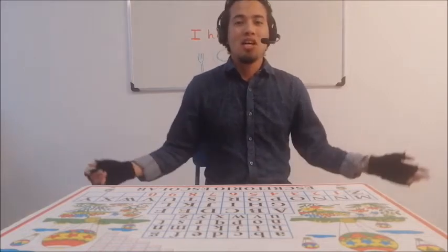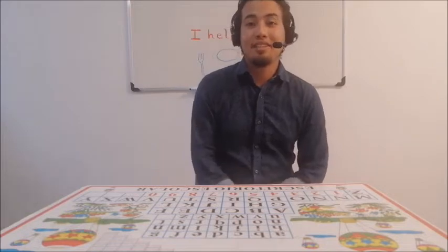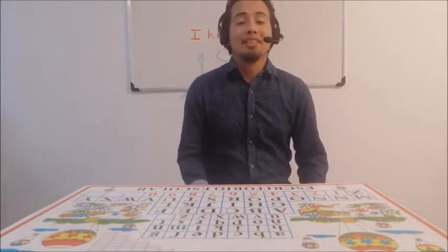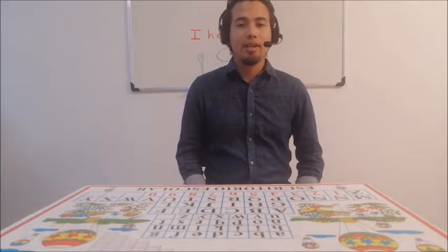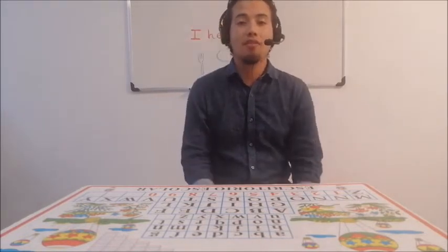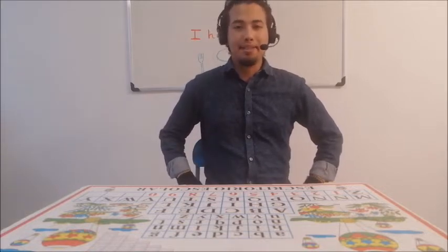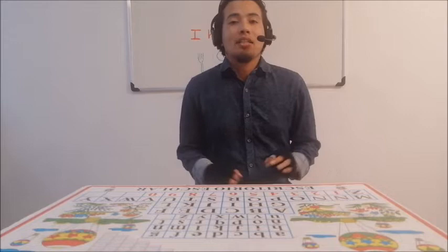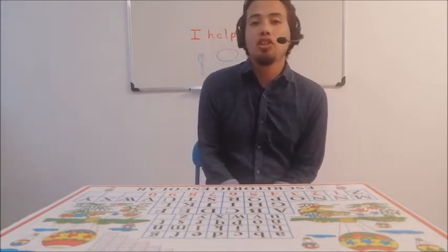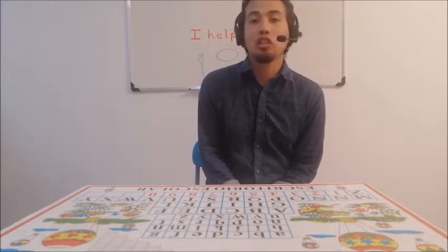And tell me, what's the date today? Que fecha es hoy? Today's date is the 19th of May 2020, right? Hoy es 19 de mayo del 2020. And today is Tuesday, right? Hoy es martes. Tuesday. Como digo martes en inglés, digo Tuesday.